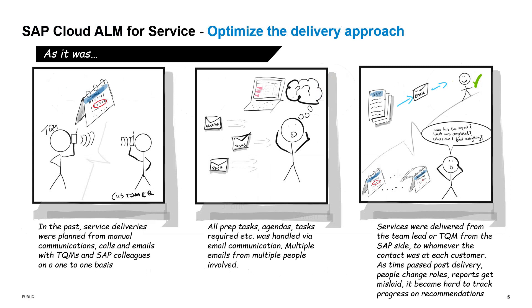So now let's walk through an example of how these services were delivered in the past. Service deliveries were planned from manual communication, and most of the time calls and emails from TQMs and SAP colleagues were held on a one-to-one basis. All prep tasks, agendas, and tasks required were handled via email communication, which often resulted in multiple emails coming from multiple different people. Post-delivery, it became increasingly challenging for customers to do things like track the progress on recommendations.